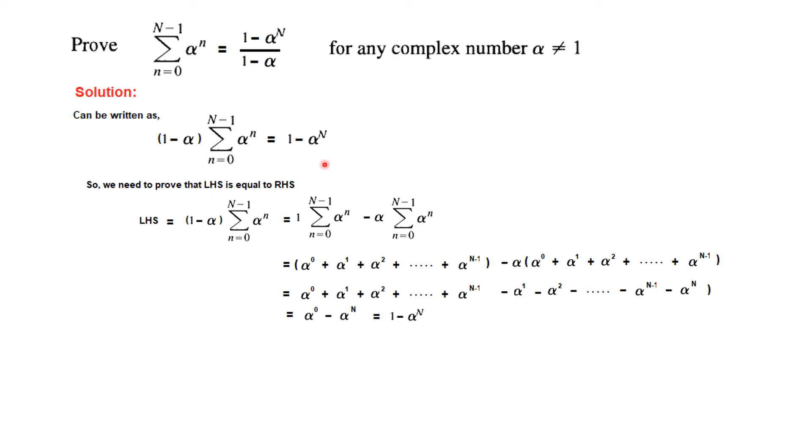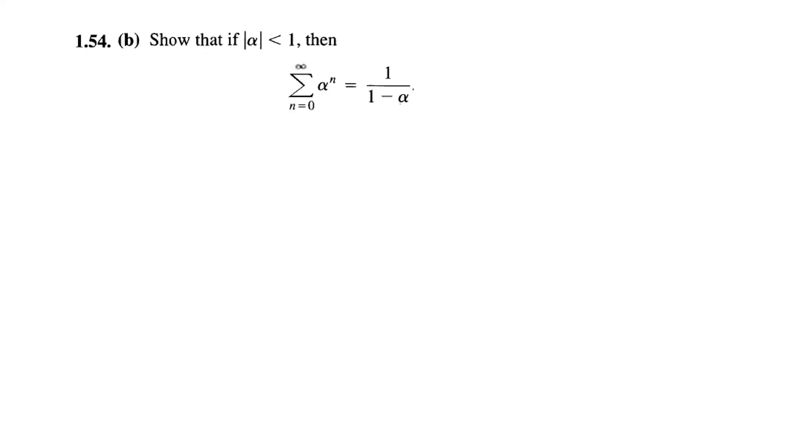And therefore, this we can write it as alpha^0 from here and minus alpha^n from here. And we know that alpha^0 is actually equal to 1, anything to the power 0 is 1, that is 1 minus alpha^n. So we have proved this, that the left hand side is equal to right hand side, and therefore we have proved that this is equal to (1 - alpha^n)/(1 - alpha).